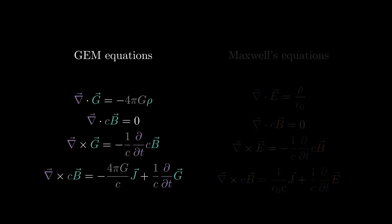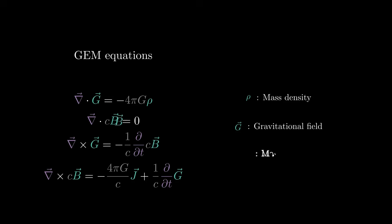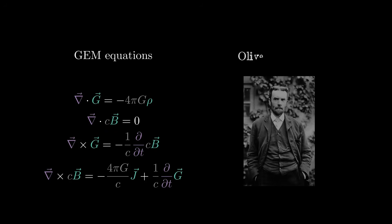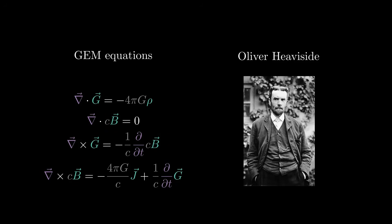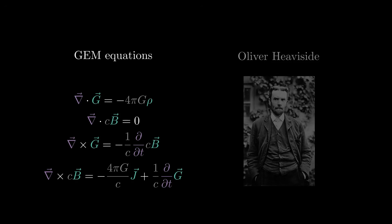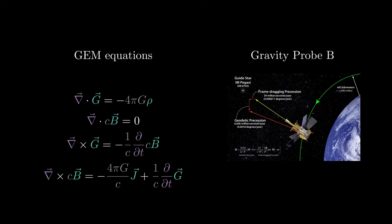This time we call them mass density, gravitational field, gravitational magnetic field, and mass current density. They were first written by Oliver Heaviside as an extension of Newtonian mechanics. They were later derived from the general theory of relativity as an approximation and experimentally confirmed around 2008.